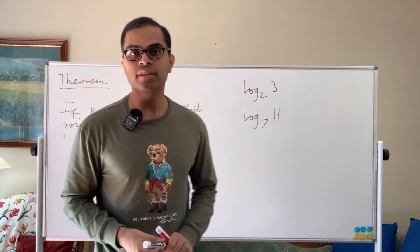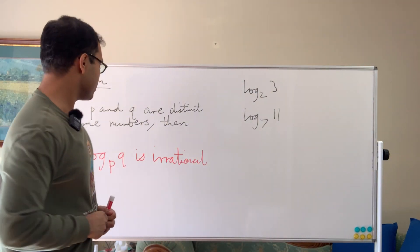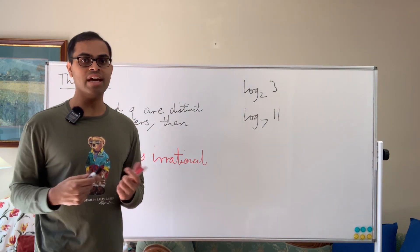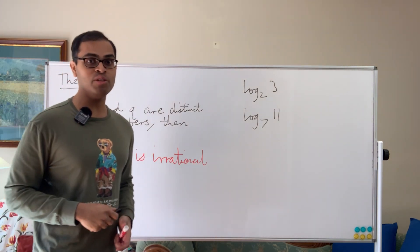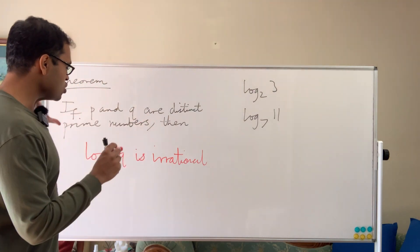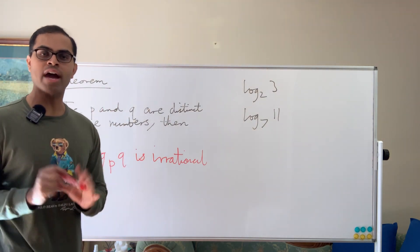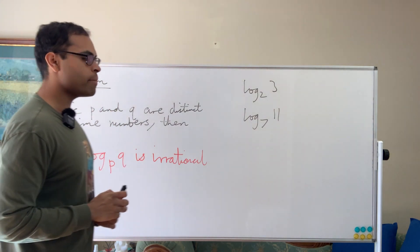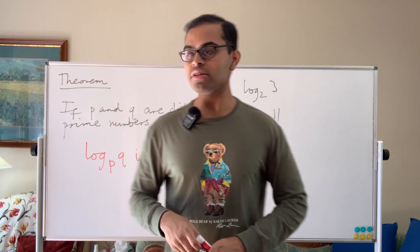In fact, the theorem goes much beyond this. You can characterize when log to the base something of something is irrational. I'll do that in another video. Drop a comment down below if you'd love to see that. But here we're just going to prove this fact just to start off with practice, why this is an irrational number, and let's just dive right into it.